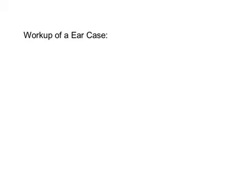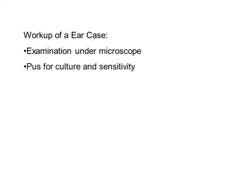How do we work up an ear case? The workup involves: number one, examination under a microscope and studying the case in detail. If there is pus, it is sent for culture sensitivity. If the ear is dry, we perform what is called a patch test — an aluminium foil is placed on the ear drum, and if the patient regains hearing, it means the ossicular chain and the rest of the sound conducting mechanism is intact.